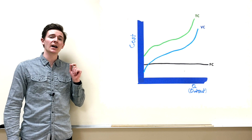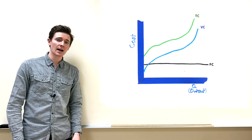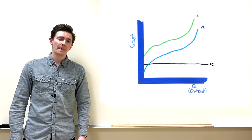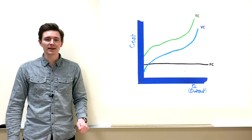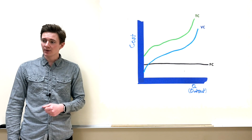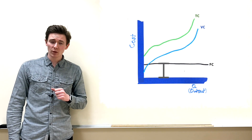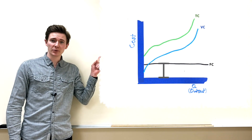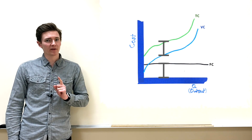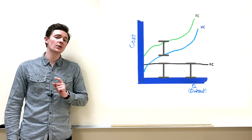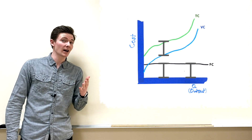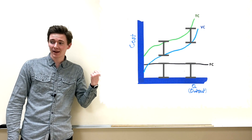Looking at the total cost curve, it sits as high above variable costs as fixed costs is above zero. So this distance here is equal to the difference between those two curves — the distance between fixed costs and zero equals the distance between total cost and variable cost.